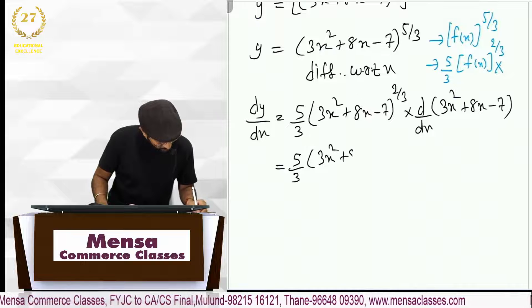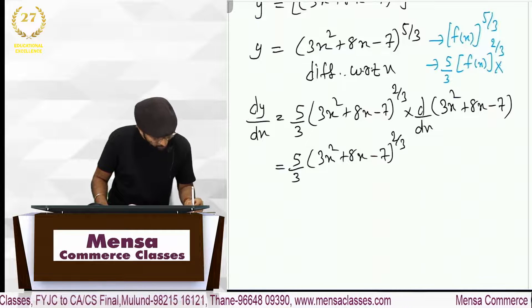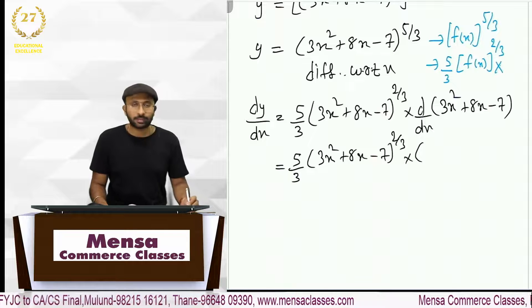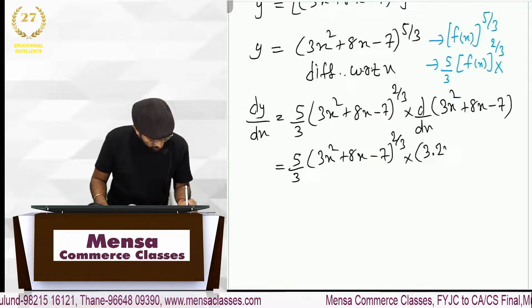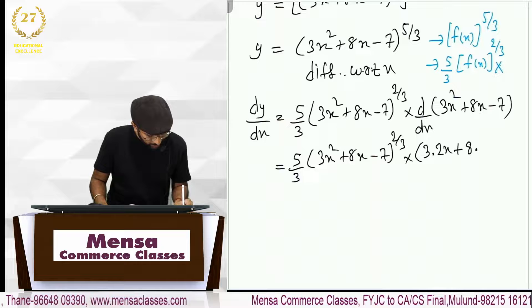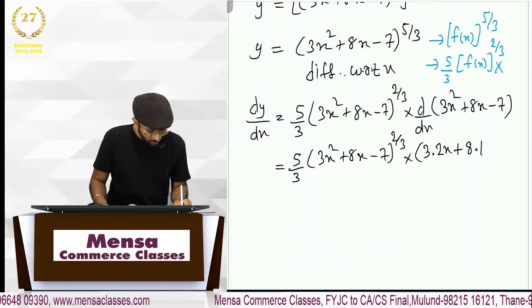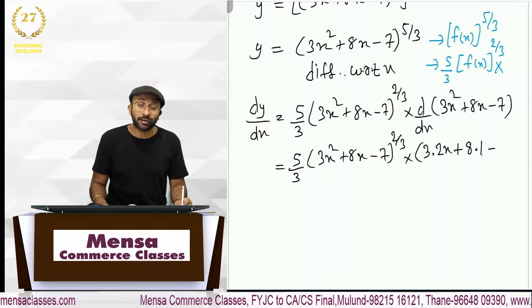3x square plus 8x minus 7 raised to 2 by 3 into अब जब आप इसका derivative करोगे, 3 को कुछ नहीं होगा, x square का derivative 2x plus 8 को कुछ नहीं होगा, x का derivative 1, minus 7 अकेला है and constant का derivative is 0.